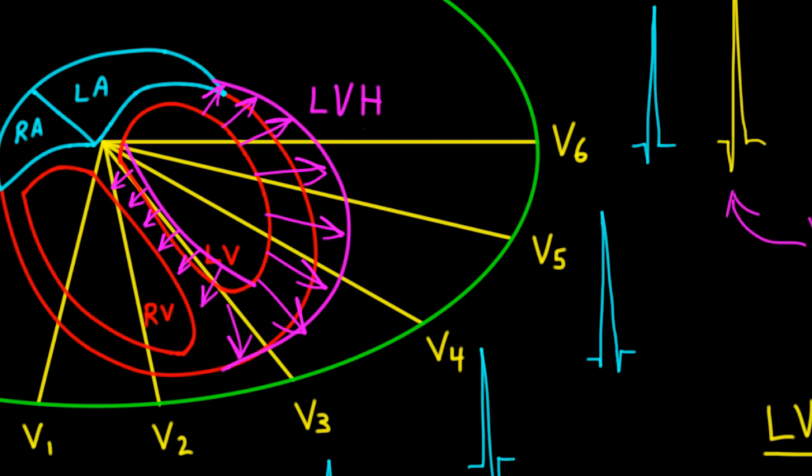With LVH, you can sometimes see septal Q waves in leads V5, V6, or AVL. Similarly, with RVH, you can also sometimes see septal Q waves in leads that have more noticeable R deflections — in this case leads V1 and V3.